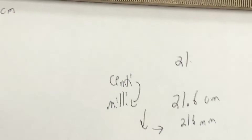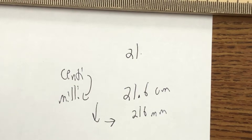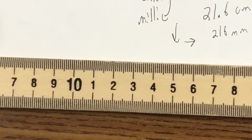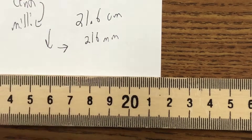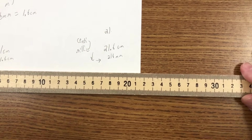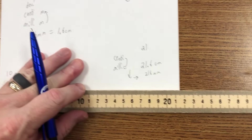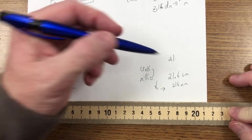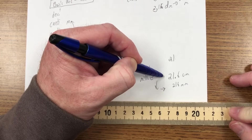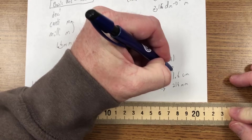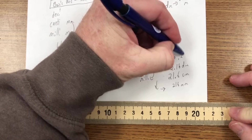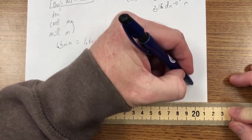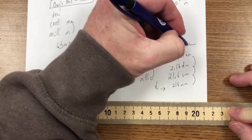So having said that, if you look at how this goes on your metric ruler: 216 millimeters is 21.6 centimeters, which is 2.16 decimeters, and that's 0.216 meters. Again, we're going up the chart and we just keep moving that decimal to the left.